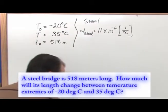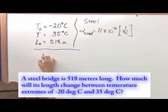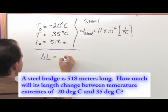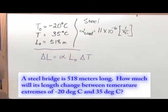So the next thing we're going to do is apply the relation that we learned before. The change in length of anything in one direction is equal to alpha, the coefficient, times the initial length times the change in the temperature.